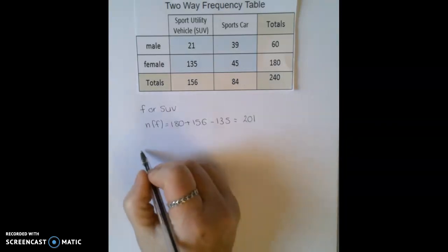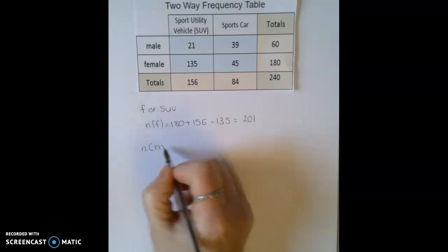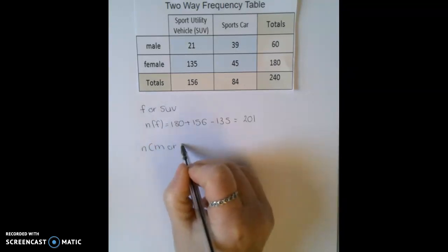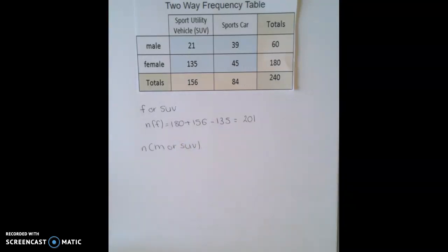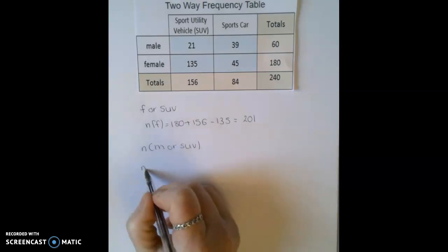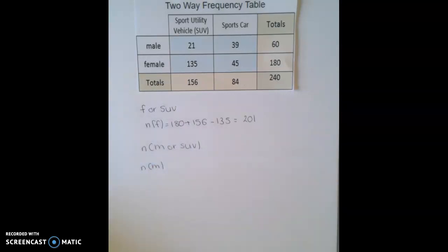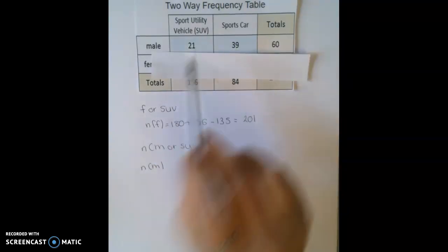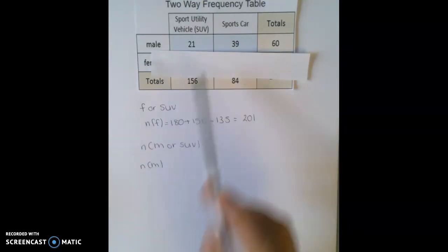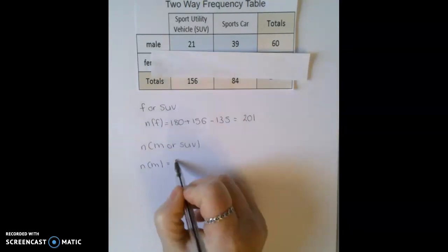So we repeat the same process for the next one. So we want to know the number of males or SUV. So we're looking at the number that's in either the male group or in the SUV group. We're not looking at that are in both. So the number of males is this row here. So that tells us how many males. It doesn't matter what car they picked. We just want to know if they were males. So that gives us 60.